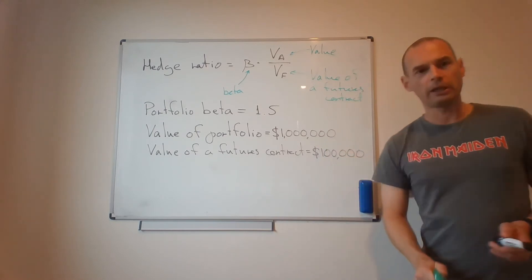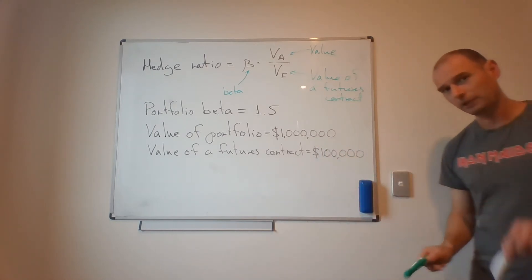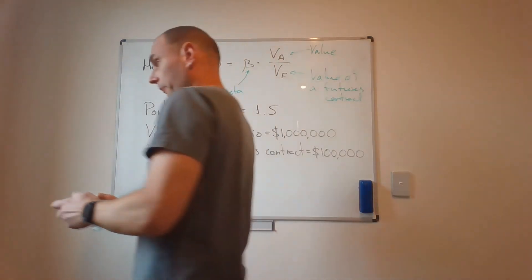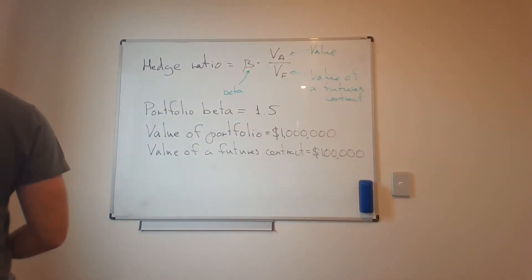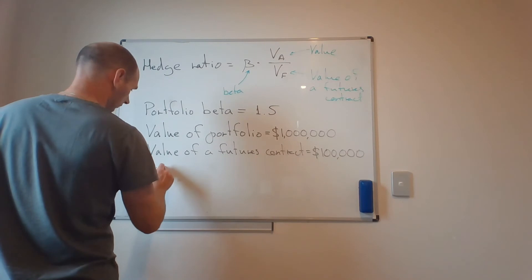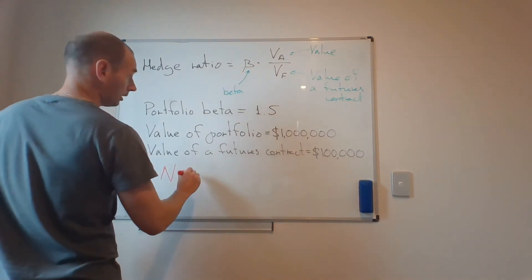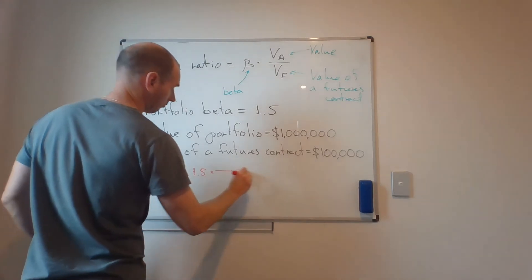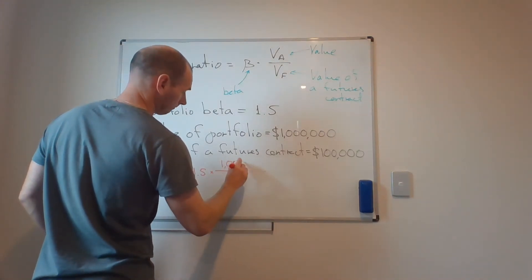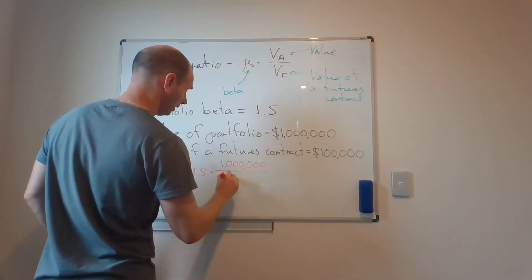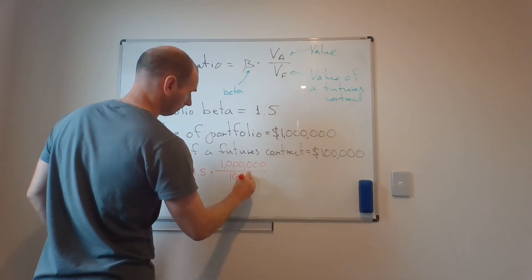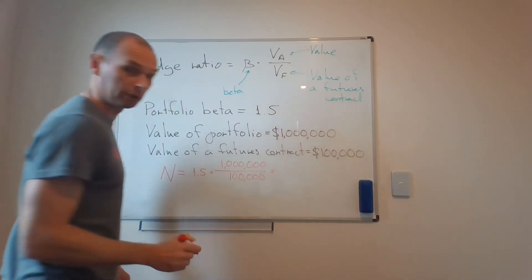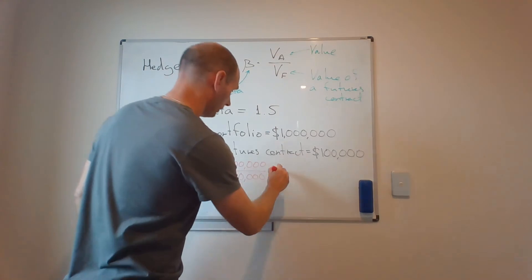You think that the answer is 10, but that's not true. Let's plug it all into the formula. So my optimal number of contracts is 1.5 times $1 million divided by $100,000. The answer is not 10. The answer is actually 15.